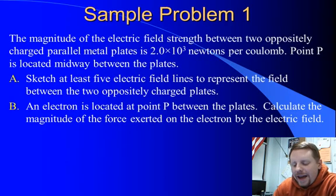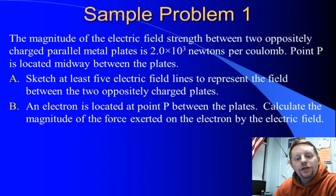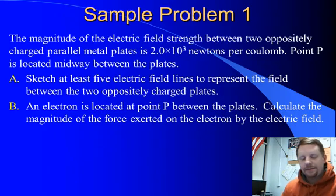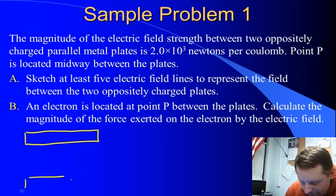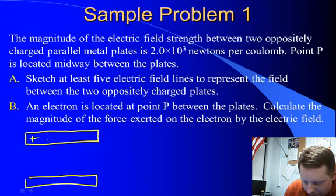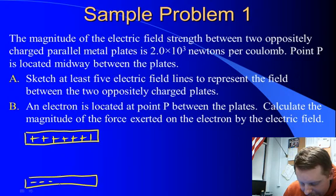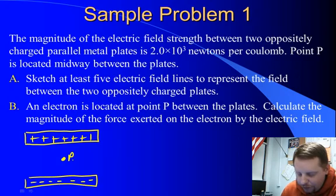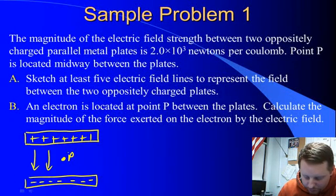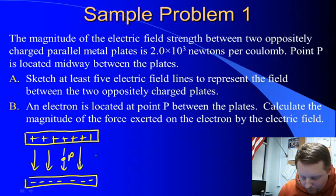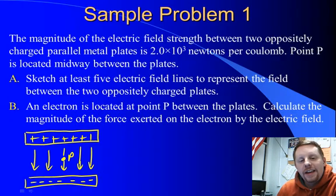Let's put this into practice. The magnitude of the electric field strength between two oppositely charged metal plates is 2 times 10 to the third newtons per coulomb. Point P is located midway between the plates. We're asked to sketch at least five electric field lines to represent the field between the oppositely charged plates. So let's draw our plates. There's one. There's another. We'll make them parallel. We make the top one positive and the bottom one negative, since they're oppositely charged. Point P is located right between the two. Now, electric field lines, if you recall, run from positive to negative. So, one, two, three, four, five. And anywhere between those two plates, it's the same electric field strength, equal to the potential difference divided by the distance between them.